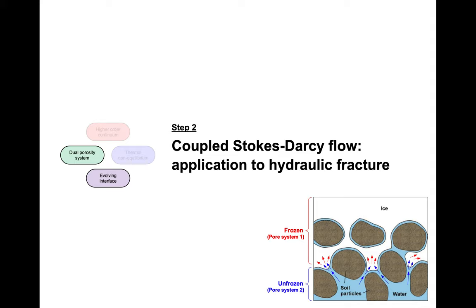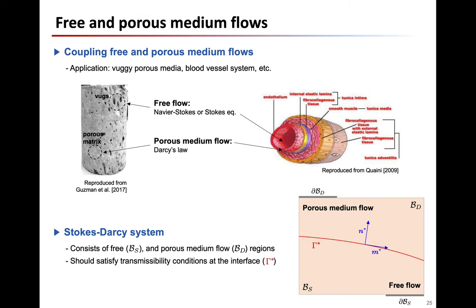Now I will talk about our second step: the dual porosity system modeled with coupled Stokes-Darcy flow, and extending this concept to model hydraulic fracture. This dual porosity system with different flow regimes will directly be used to model different fluid flow mechanisms in frozen and unfrozen regions. We focus on the dual porosity system where we model free flow in one system and porous medium flow in the other. This concept is used to model vuggy porous media or blood vessel systems with two different regions depending on pore size. Inside large pores called vugs, fluid flow is modeled with Navier-Stokes or Stokes equations, while Darcy's law is used for fluid flow inside the matrix. In this study, we modeled the free flow region with the Stokes equation and the porous medium flow region with Darcy's equation.